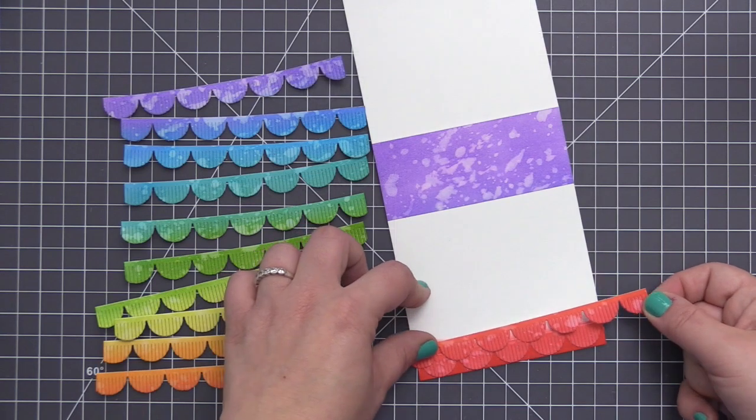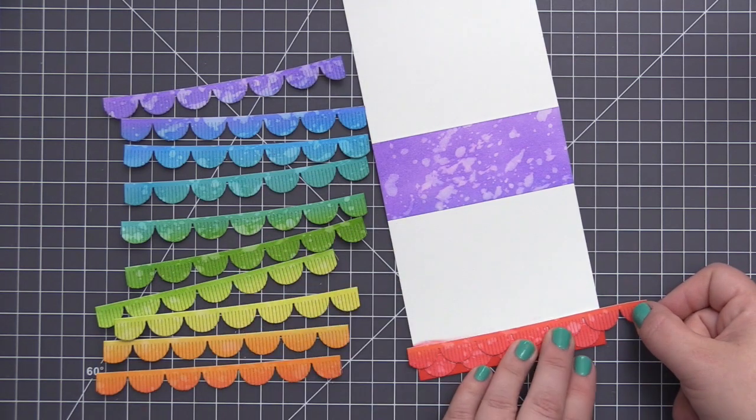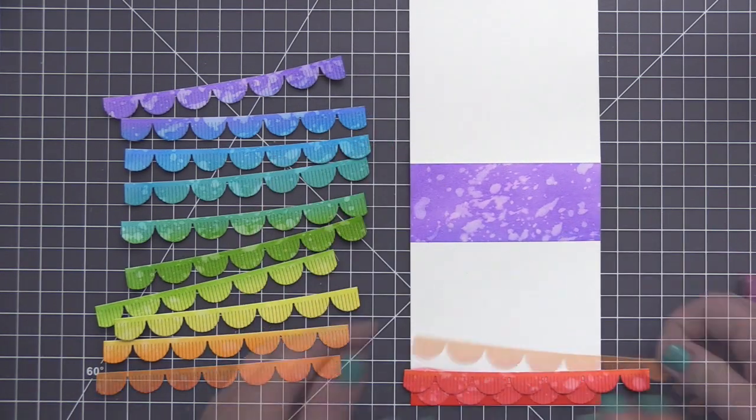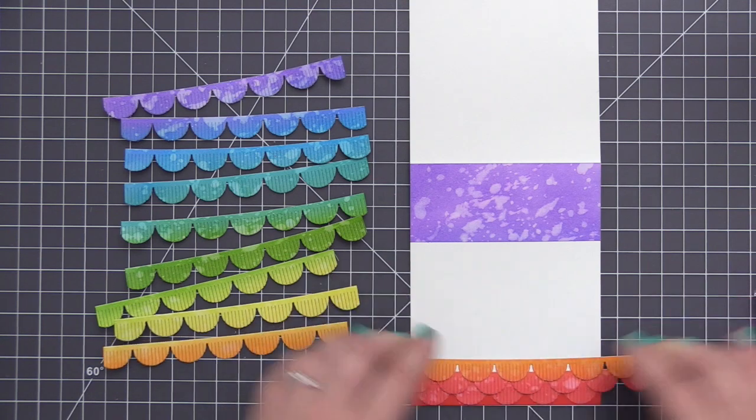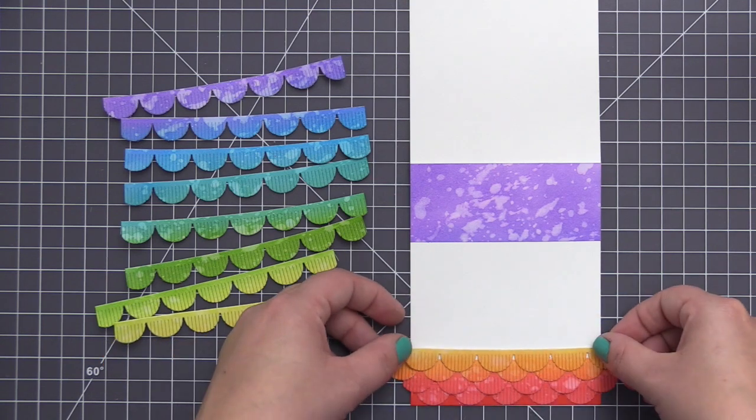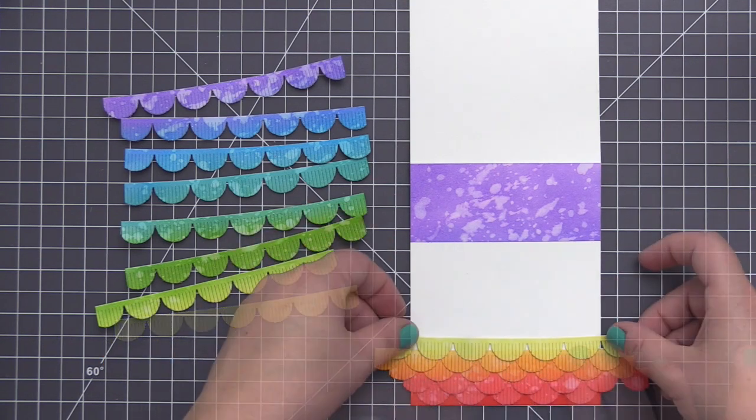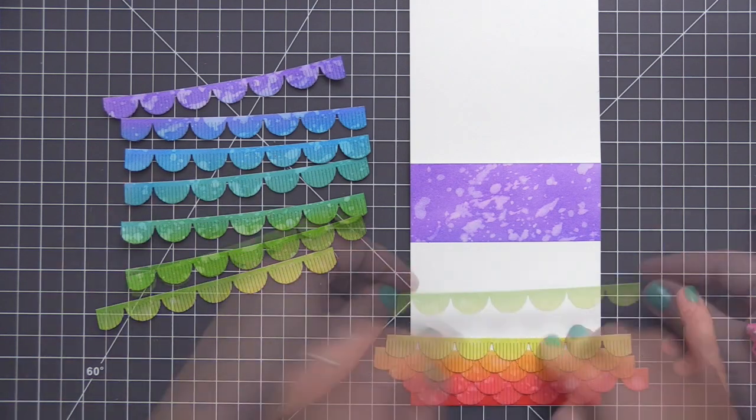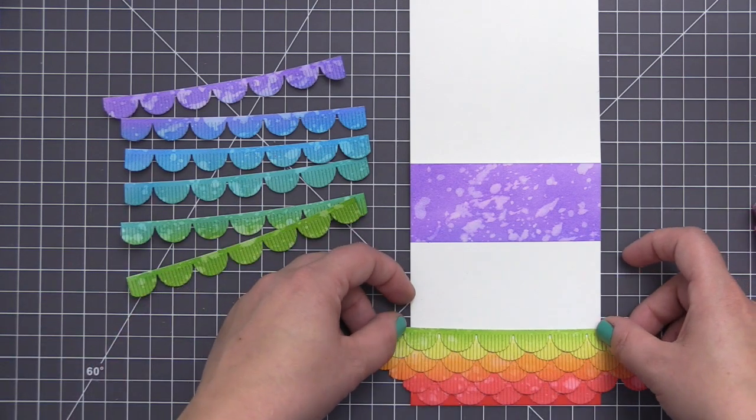I adhered the purple cardstock panel to the top and now we're going to work our way from the bottom of the card base up towards the top adding all of these fringe scallop details. So I'm starting with the red and then just going in order, and I have them all in order beside me so I can just quickly grab what I need and just add it onto the card.